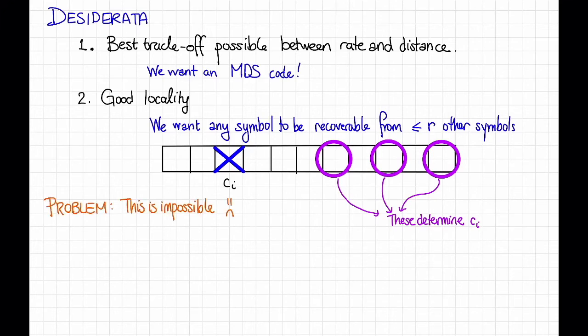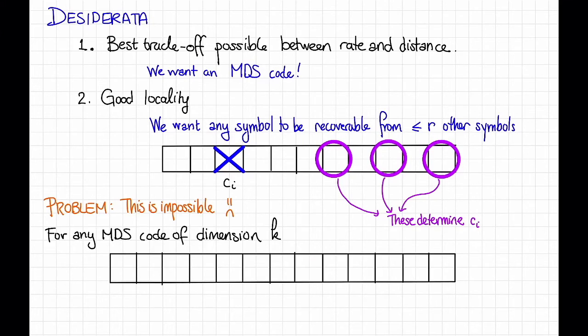The reason that this is impossible is the following. For any MDS code of, let's say, dimension k, it turns out that the values for any k-1 symbols tell us nothing about the value of some k-th symbol. That is, if we choose values for any k-1 symbols of a codeword, let's say these k-1, then the value of any other symbol, let's say this one, can be anything.